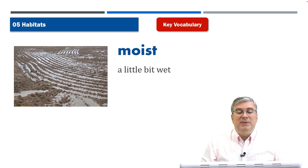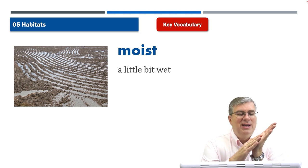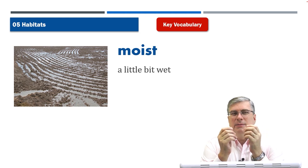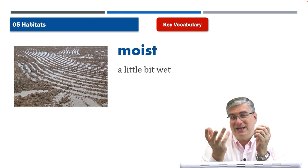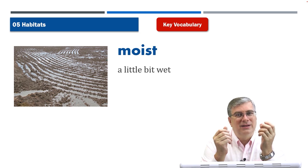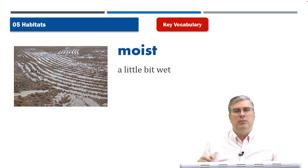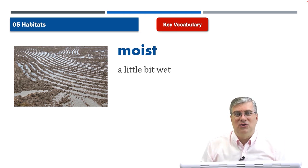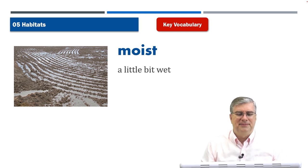'Moist' means a little bit wet. Think about baby wipes — they're moist, they contain a little bit of water. A regular tissue is dry, but a baby wipe is moist. It's much easier to clean things with a moist tissue than a dry one. Usually you have to add water to a dry tissue if you want to clean something.